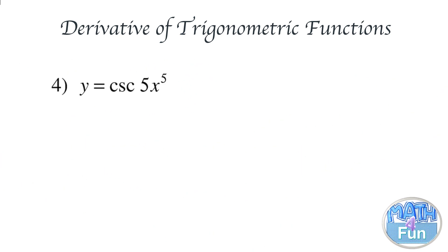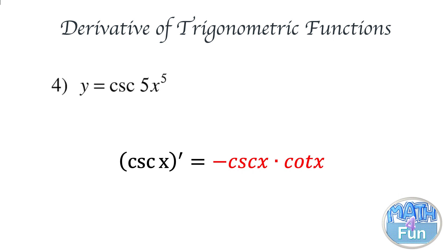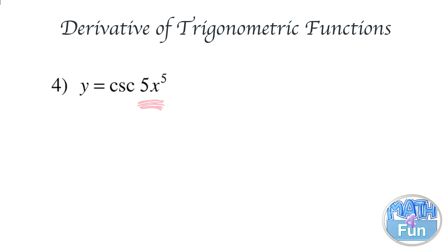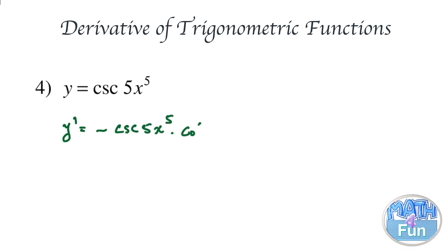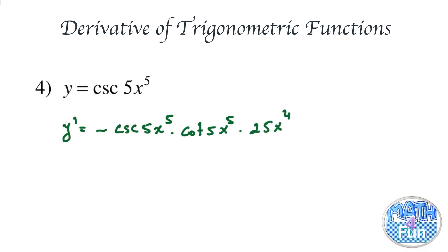Here we have y equal to cosecant of 5x to the power 5. The derivative of cosecant is minus cosecant cotangent. Applying the chain rule, y prime equals minus cosecant of 5x to the power 5 times cotangent of 5x to the power 5, times the derivative of the inside. We drop down the 5, multiply it by 5, giving 25x to the power of 4.